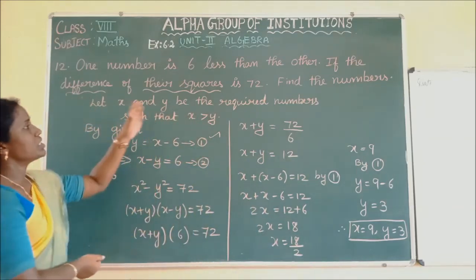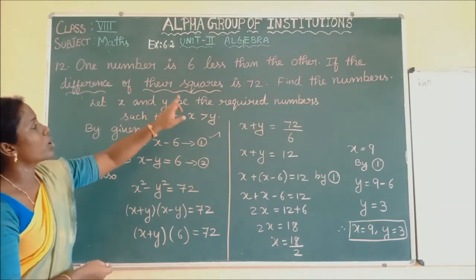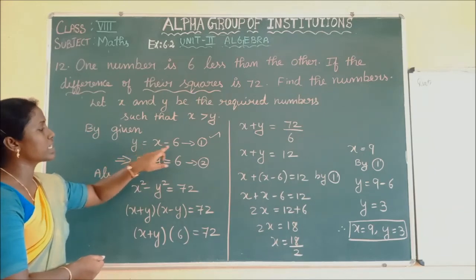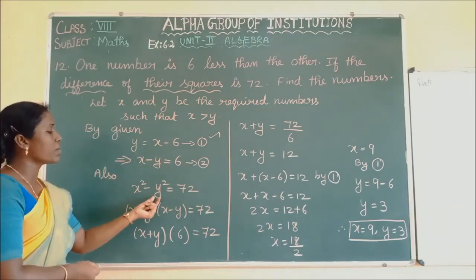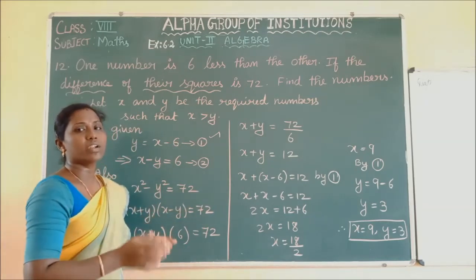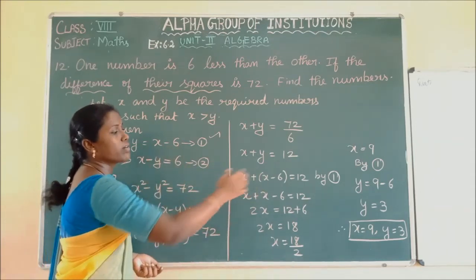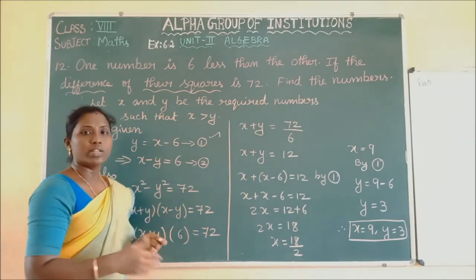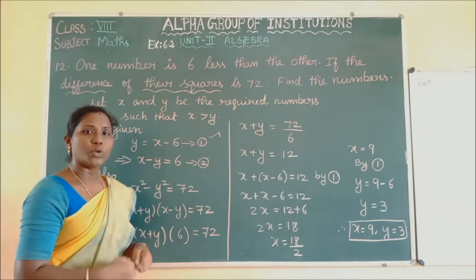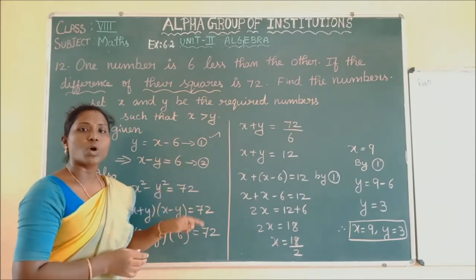Therefore the required numbers are X equals 9 and Y equals 3. Whenever problems like this are given, first assign variables, frame the equations from the given conditions, use the identity, substitute equation 1, and solve to find the answer.